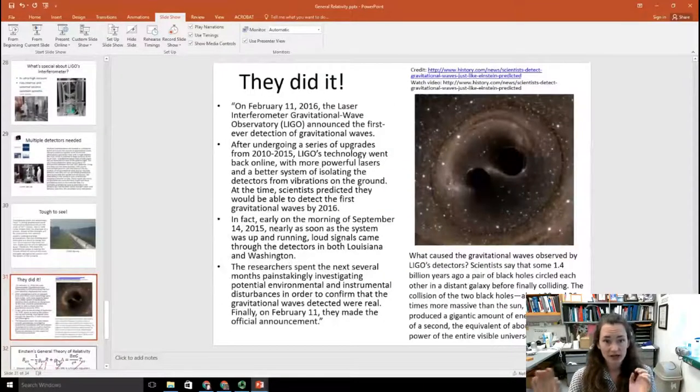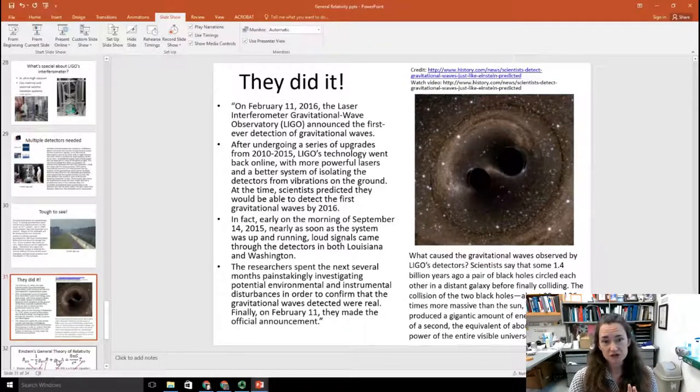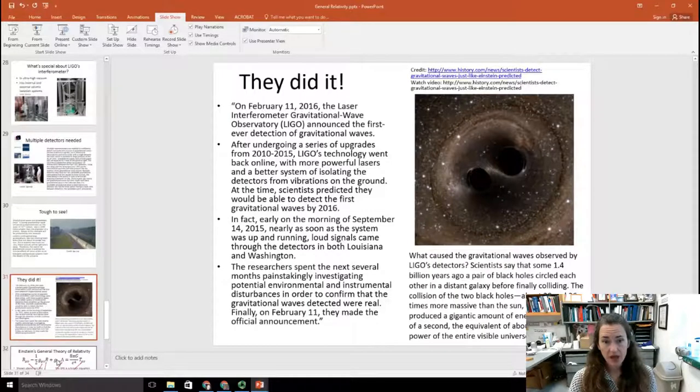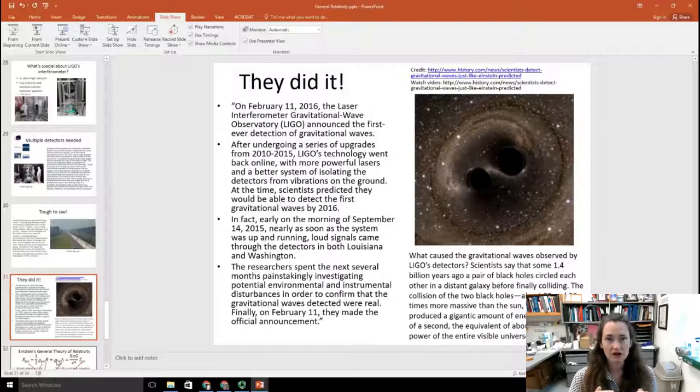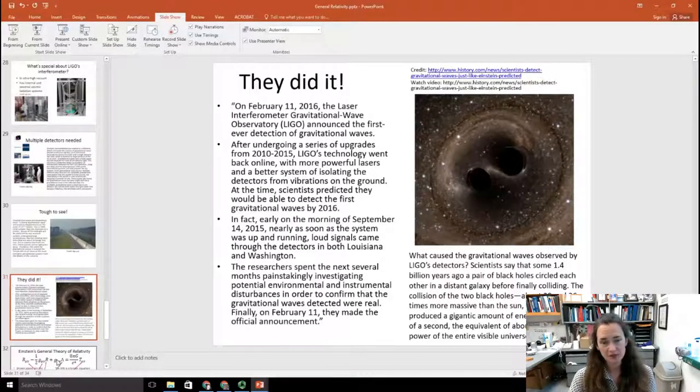However, they did it. And it was amazing. On February 11, 2016, LIGO announced the first ever detection of gravitational waves. So what happened was, between 2010 and 2015, they were doing a series of upgrades because they hadn't seen any gravitational waves yet. And they thought, well, if we made our equipment just a smidge better, then we might actually be able to see. And LIGO's technology went back online in 2015. And at the time, the scientists predicted that they'd be able to detect the first gravitational waves maybe by 2016. But in fact, you can imagine how excited they must have been. Early on the morning of September 14, 2015, nearly as soon as the system was up and running, they got alarms. Loud signals came through the detectors in both Louisiana and Washington. And then the researchers spent the next several months painstakingly investigating potential environmental and instrumental disturbances in order to confirm that the gravitational waves that they detected were real. And then finally on February 11, they made the official announcement.